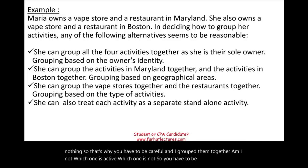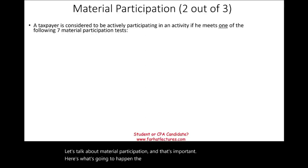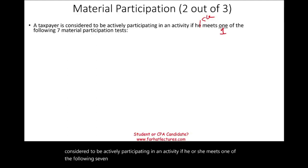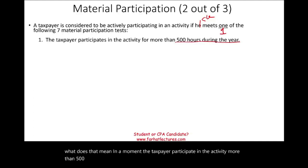Let's talk about material participation — that's important. The IRS states that a taxpayer is considered to be actively participating in an activity if he or she meets one of the following seven material participation tests. You only have to meet one. Test one: the taxpayer participates in the activity more than 500 hours during the year. If you can show you participated more than 500 hours, you are considered active.